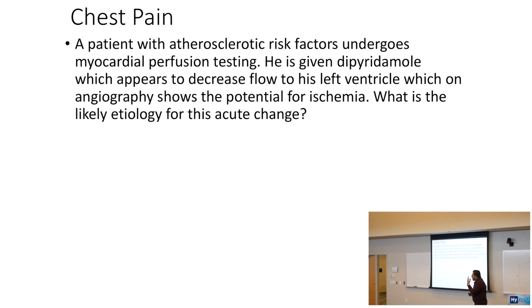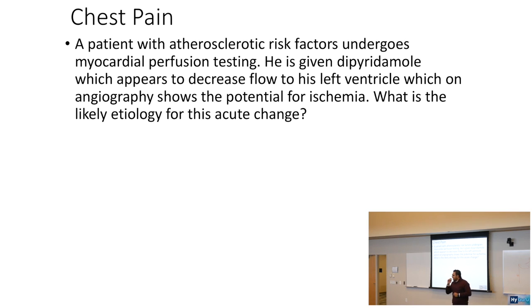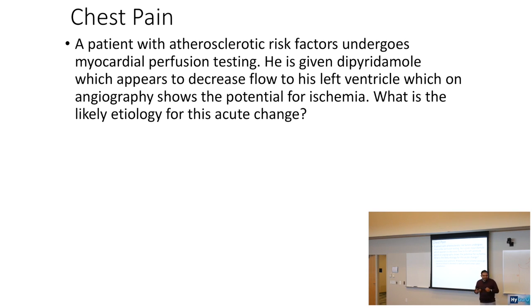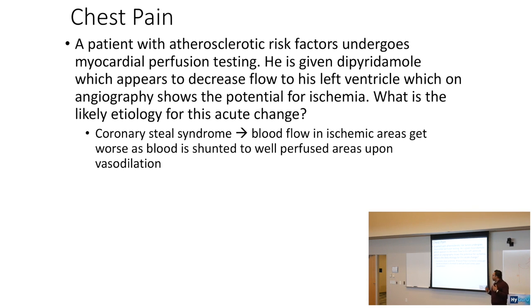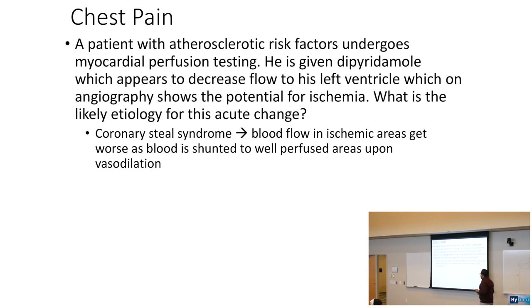A patient with atherosclerotic risk factors undergoes a myocardial perfusion test. He is given dipyridamole, which decreases flow to the left ventricle, showing the potential for ischemia on angiography. The likely etiology for this acute change is coronary steal syndrome. Basically, blood flow in ischemic areas gets worse as blood is shunted to well-perfused areas upon vasodilation. Dipyridamole vasodilated that area, and the blood went to a better-perfused area — that's coronary steal syndrome.